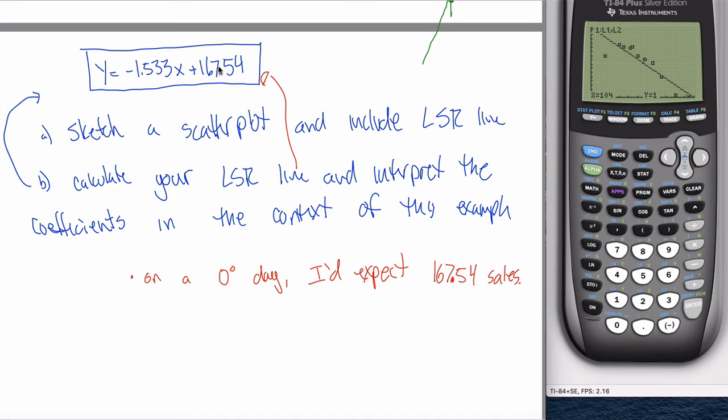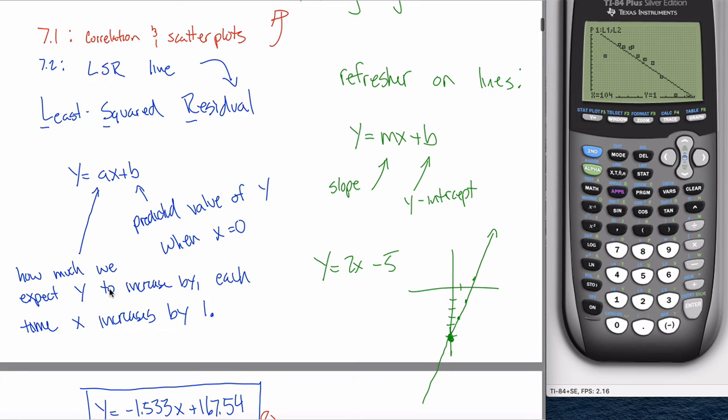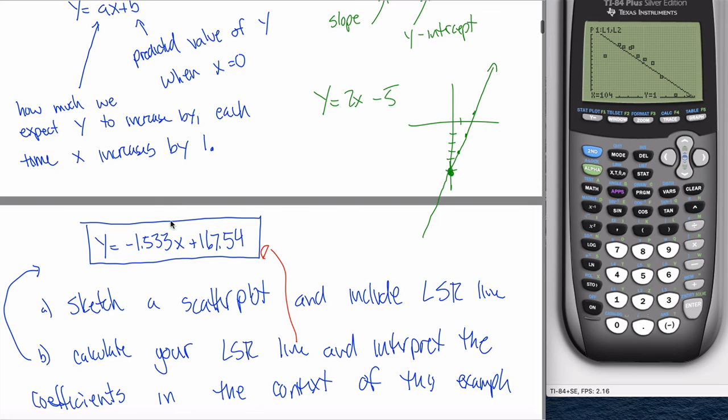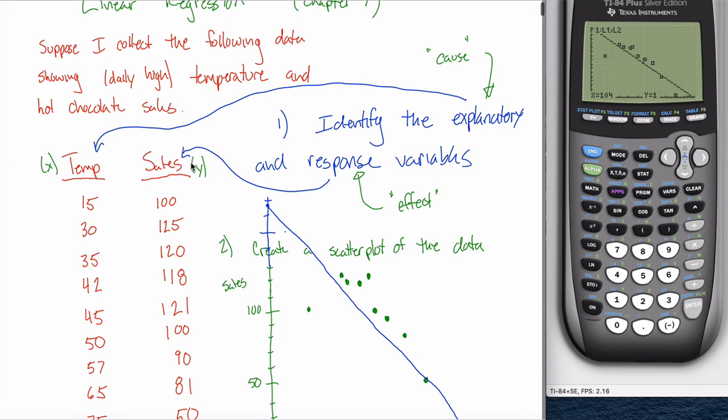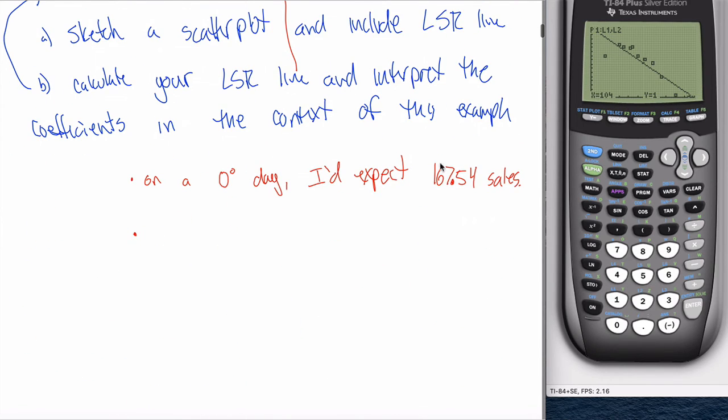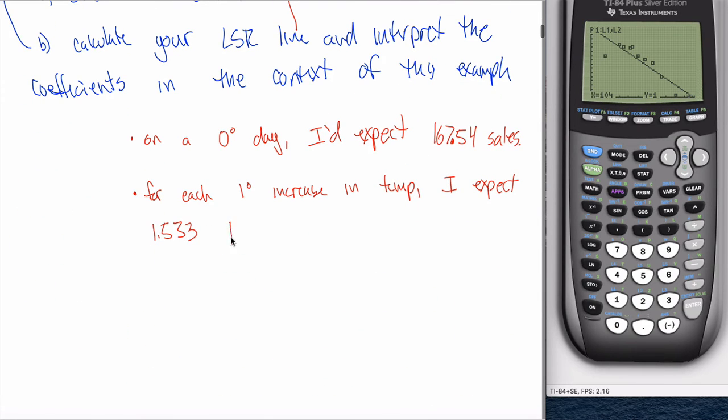You might argue you can't have 167.54 sales. You can't have a fractional amount of sales. That's true. But don't worry about it. This would be a great interpretation of this coefficient. There's two different coefficients. There's this one and there's this one. We just interpreted B. We want to interpret A as well. That negative 1.533. What's that mean? Well, that tells you how much we expect Y to increase by each time X increases by one. So we expect Y to increase by negative 1.533. Maybe it's easier to think about it as we expect Y to decrease by 1.533 each time X increases by one. Recall that X is the temperature and Y is the sales. So this is telling us how much we expect sales to drop by each time temperature increases by one degree. So maybe on a zero degree day, I'd expect 167.54 sales. But for each one degree increase in temperature, I expect 1.533 less sales.